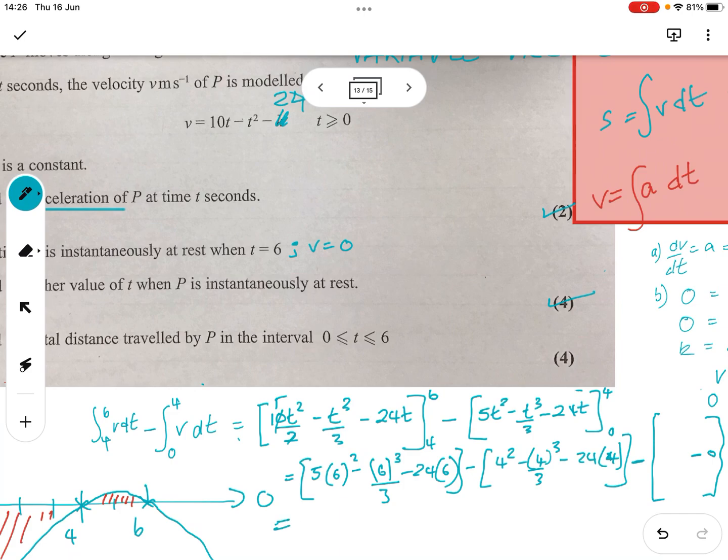So, let's work out the various values. So, we've got 5 times 6 squared minus 6 cubed. No. Oh, in the wrong area. Right. 5 times 6 squared minus 6 cubed over, no, over. Sometimes it's just hard. Over 3 minus 24 times 6.